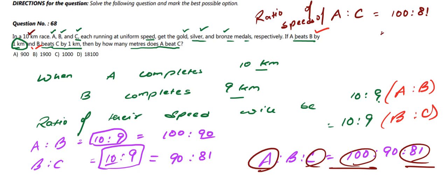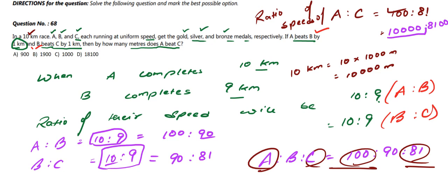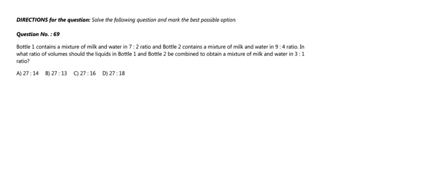Since A:C = 100:81 in speed, when A completes 10,000 meters, C completes only 8,100 meters. Therefore A beats C by 10,000 − 8,100 = 1,900 meters. Our answer is 1900 meters, which matches option B. Option B is the correct answer. This concludes the video — further solutions will be in the next video.